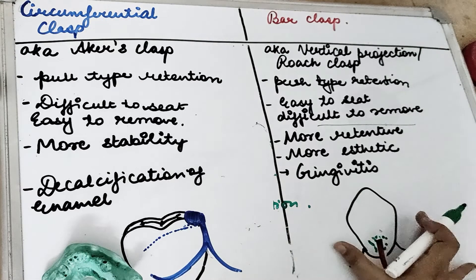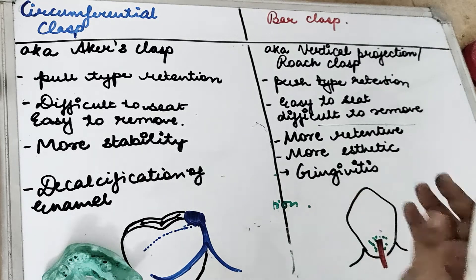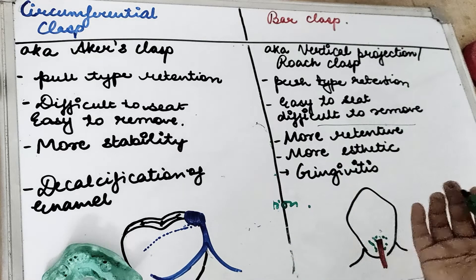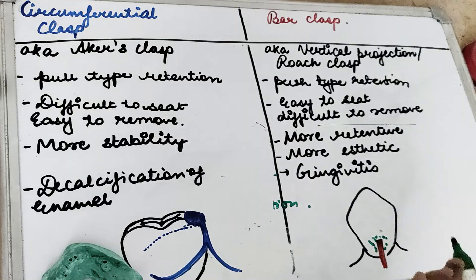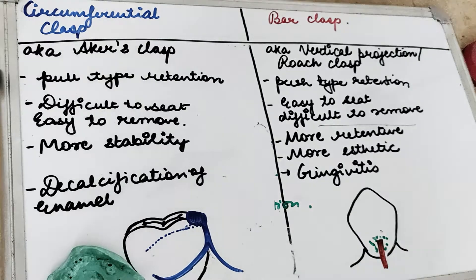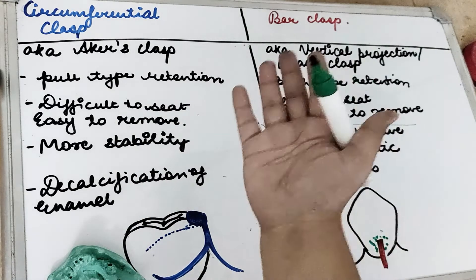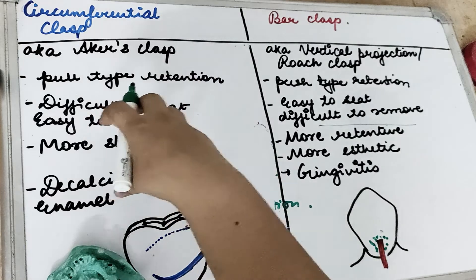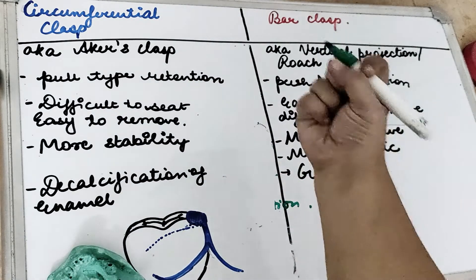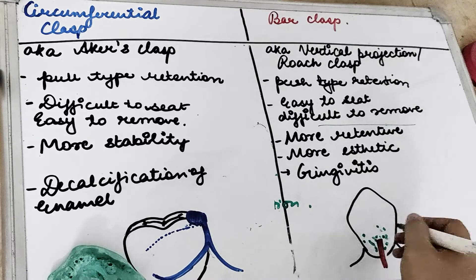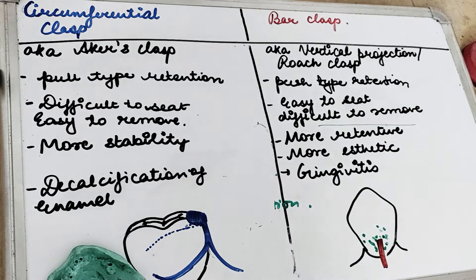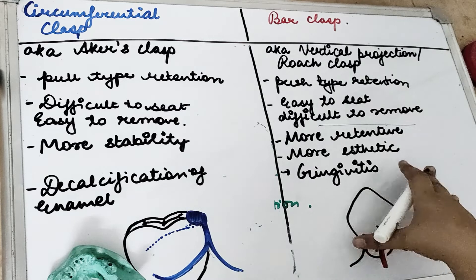A bar clasp is coming from the gingiva. When it is engaging the gingival tissues, there is accumulation of food, which can lead to plaque accumulation and gingivitis caused by the bar clasp. So the circumferential clasp is the most logical design — it is easy to design, easy to make, easy to repair, and it doesn't collect food debris. While the bar clasp has a tendency to collect food near the gingiva, often leading to gingivitis.